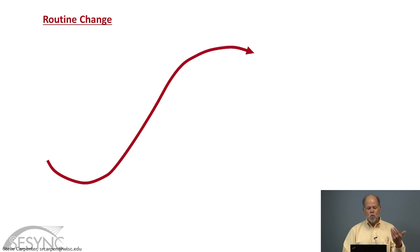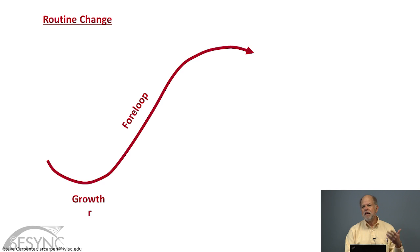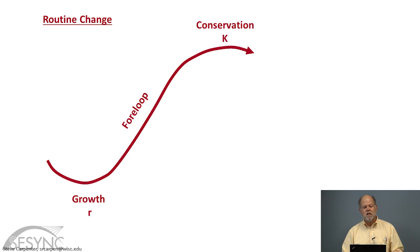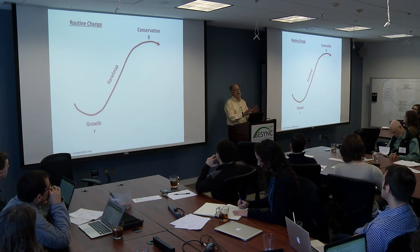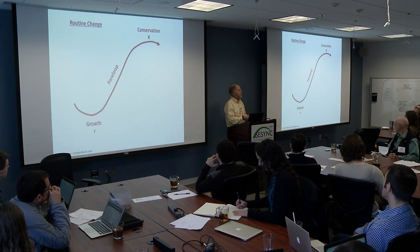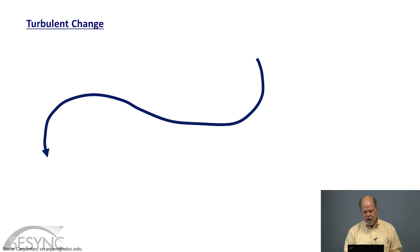The basic idea of resilience as we conceived it in the mid-90s was that there are two phases of change. There's routine change that we call the front loop, which moves from a growth phase — nicknamed R for the famous logistic equation of population ecology — to a conservation phase, nicknamed the K phase, again by allusion to population ecology. There are many models for routine change as a system develops, as plants colonize a new substrate, as a new business develops, as a new organization is formed.